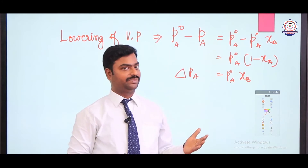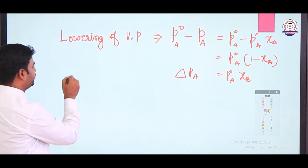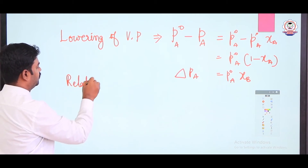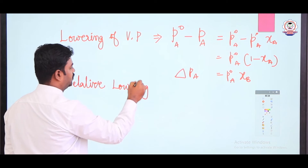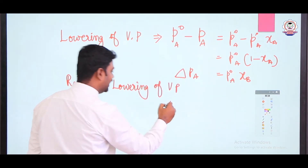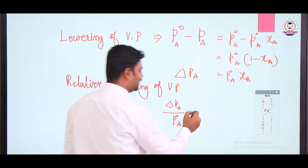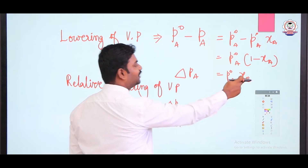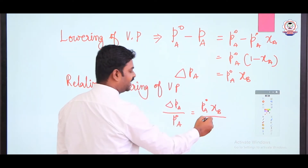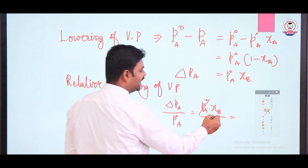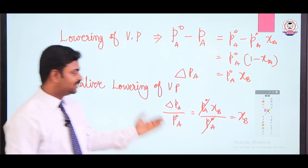What is relative lowering of vapour pressure? We are going to relate the vapour pressure of the solvent and the lowering of vapour pressure. That is ΔP_A divided by P₀_A — this is called relative lowering of vapour pressure. That equals ΔP_A (which is P₀_A into X_B) divided by P₀_A. We can cancel P₀_A and we get the value X_B. So the relative lowering of vapour pressure equals X_B, the mole fraction of the solute.